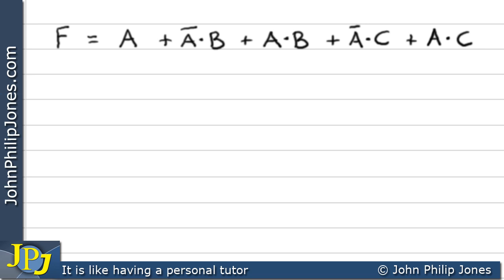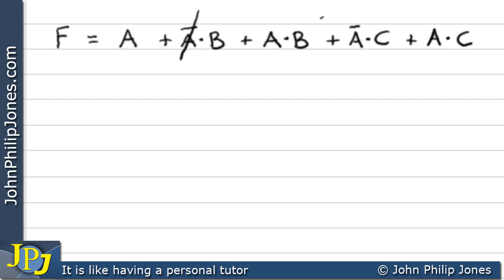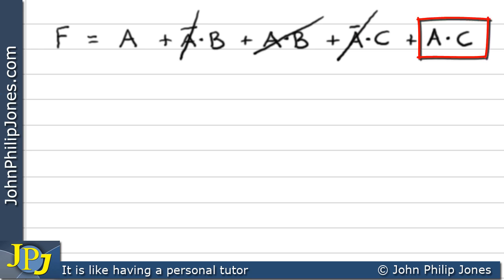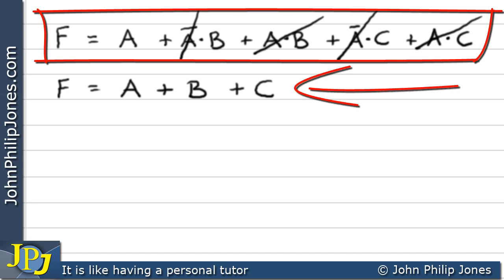Here we have a Boolean expression where A is by itself. We look at the four ANDed terms. The first contains NOT A, so it gets knocked out. The second is A AND B and contains A, so all of that goes. The third contains NOT A, so that goes out too. And A AND C contains A, so that gets knocked out. We rewrite F as A OR B OR C — the original expression has been minimized to A OR B OR C.